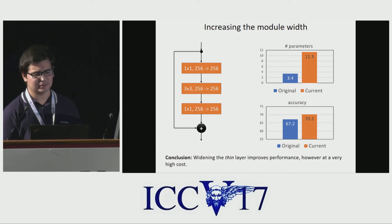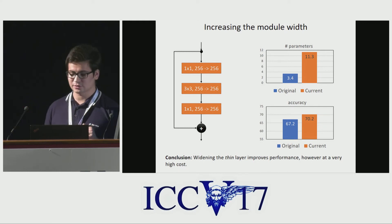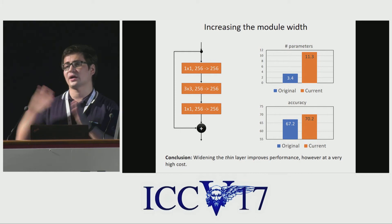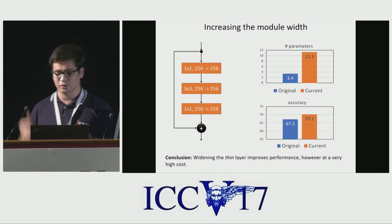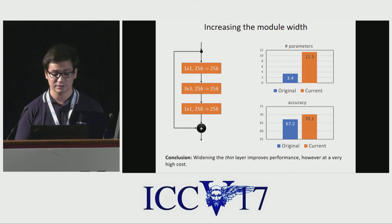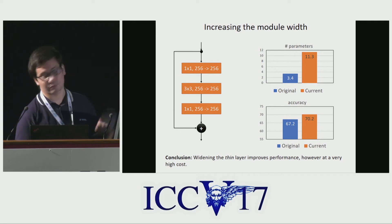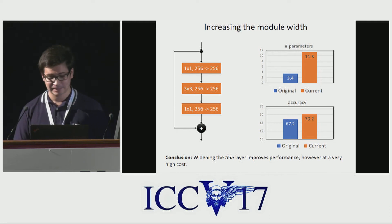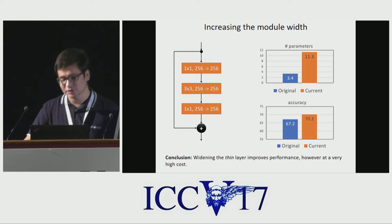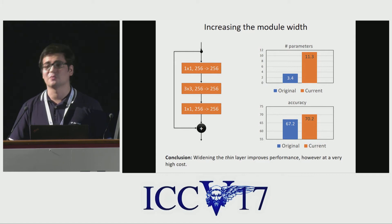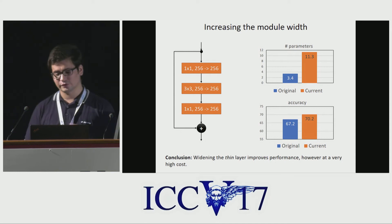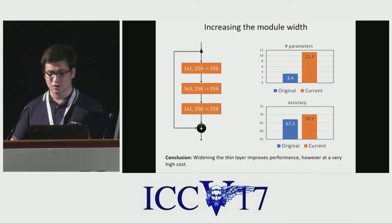The first thing we tried is to simply increase the number of parameters. Due to the extreme quantization, passing the same amount of information may require a higher number of channels or weights. Therefore, we increased the number of channels at the checkpoint created by the thin layer, effectively removing the bottleneck from the bottleneck. By doing so, only a modest performance improvement was observed, while the number of parameters in the network became three times as large. In conclusion, performance cannot be improved just by simply increasing the size or the width alone.